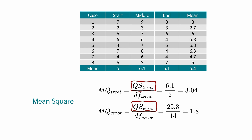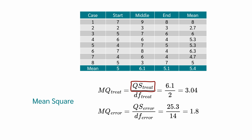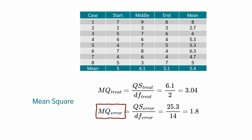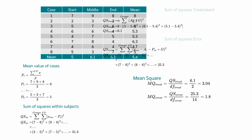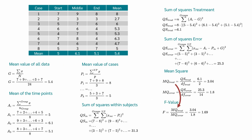We then calculate the mean squares by dividing each sum of squares by its degrees of freedom. The mean square of the treatment is the sum of squares of the treatment divided by its degrees of freedom, which is the number of factor levels minus 1 — so 3 time points minus 1 equals 2. The mean square of the residual uses degrees of freedom equal to (number of factor levels − 1) × (number of subjects − 1), which gives 2 × 7 = 14. The F-value is the mean square of the treatment divided by the mean square of the residual. Finally, we calculate the p-value using the F-value and the degrees of freedom from the treatment and residual.